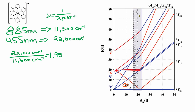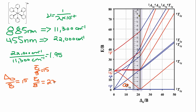We can now say with good certainty that Δo/B = 15 for our complex. From the diagram at that point, E₁/B = 15 and E₂/B ≈ 27 for the two transitions.